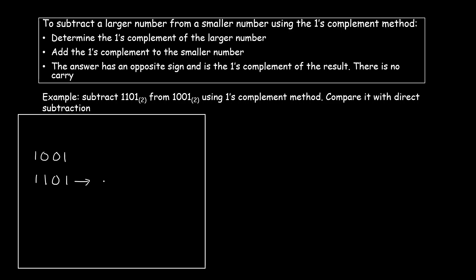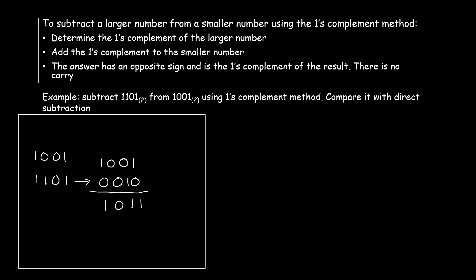The one's complement of 1101 is 0010. If you don't know how to find one's complement, please refer to my previous video. Now I write the first number 1001 as it is and add these two numbers: 1+0=1, 0+1=1, 0+0=0, and 1+0=1. For more on binary addition, please refer to my video on binary addition.